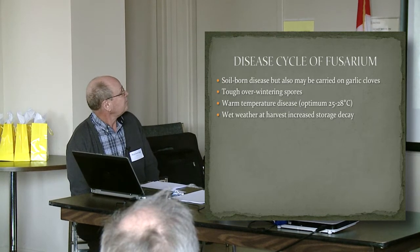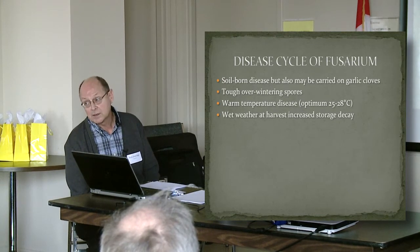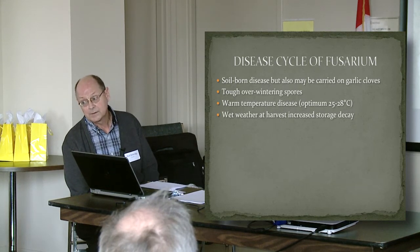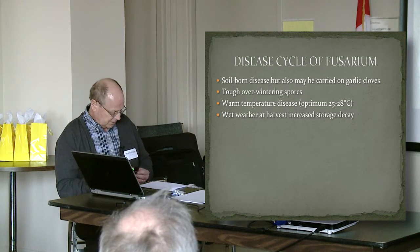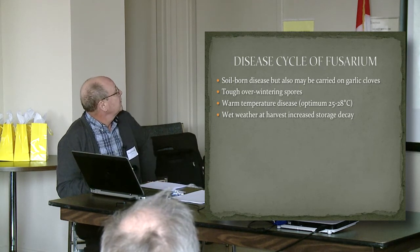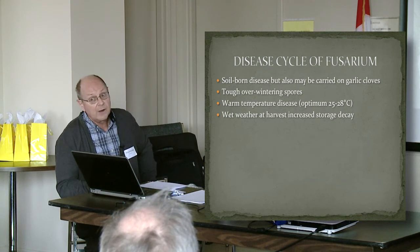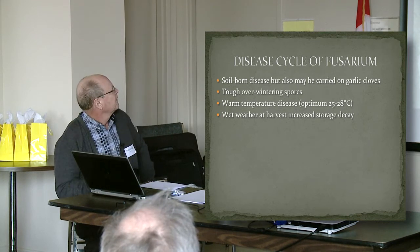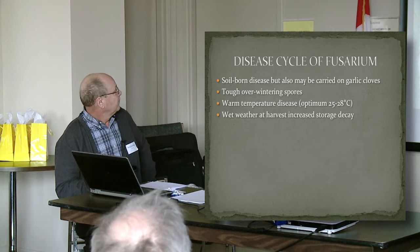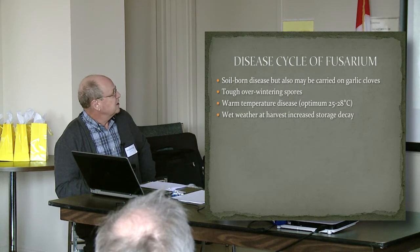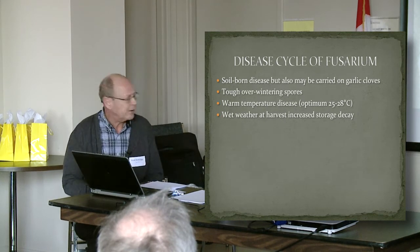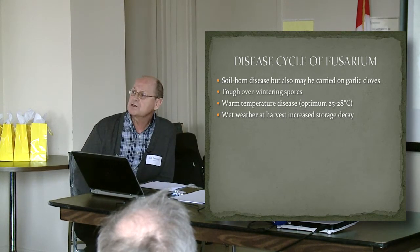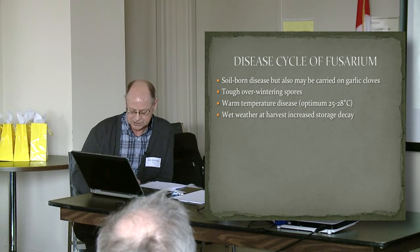This is a soilborne disease and it's also carried on garlic cloves — so if you buy infected garlic, you're going to introduce it into your field. It does have tough overwintering spores, but they don't last more than three or four years in the field. It's a warm temperature disease, with an optimum temperature of 25 to 28 degrees Celsius. Wet weather close to harvest does increase your storage problems with this disease.